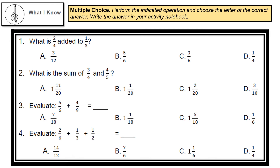Number 3: Evaluate 5/6 plus 4/9. A. 7/18, B. 1 1/18, C. 1 5/18, or D. 1/6.